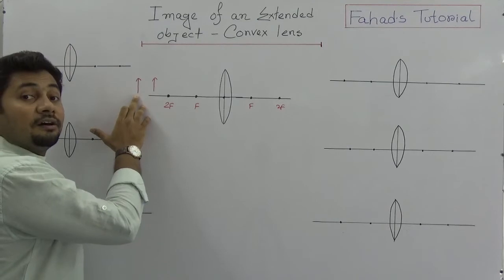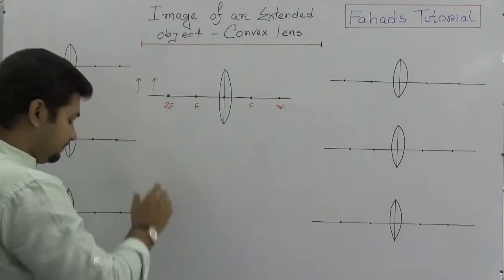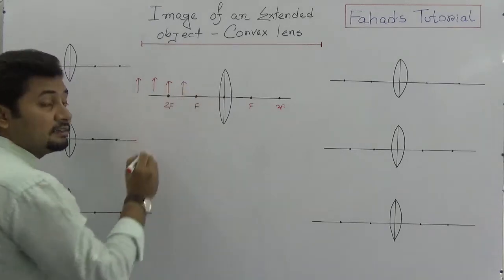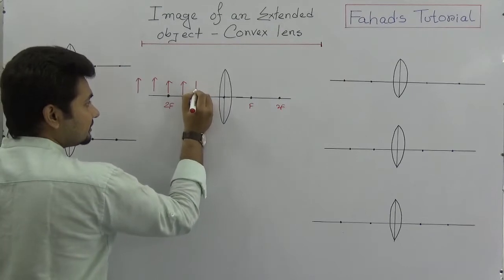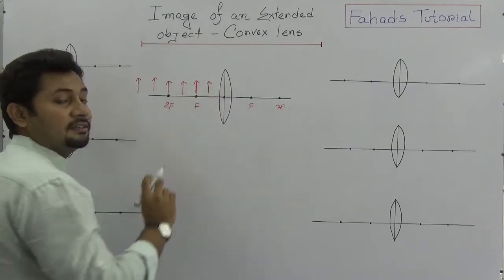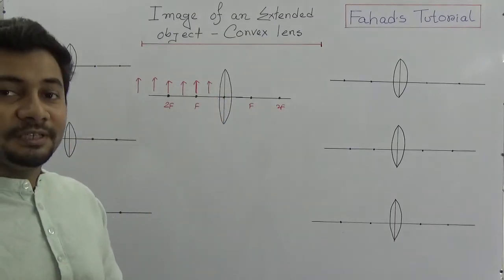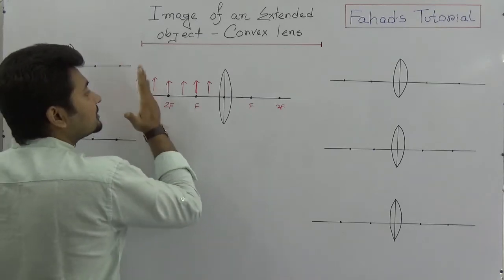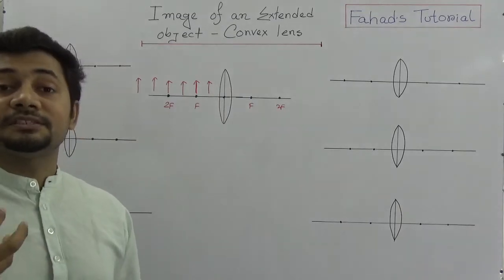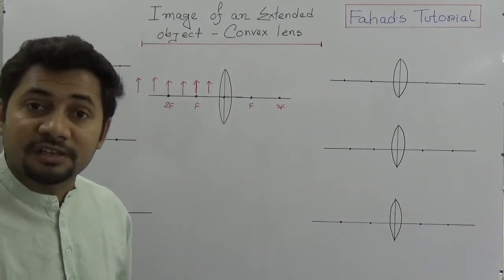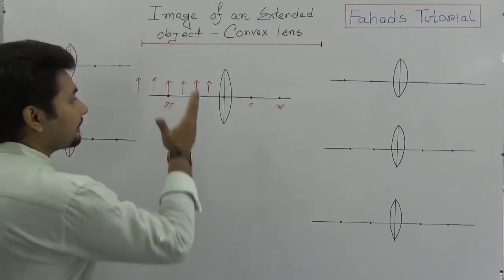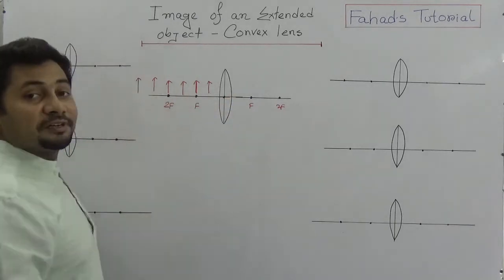Object at infinite is position one. Outside of 2F is position two. Object at 2F is position three. Between F and 2F is position four. At focus is position five. And between the optical center and the focus is position six. So object can be in six different positions, and the position, nature, and size of the image will vary accordingly.